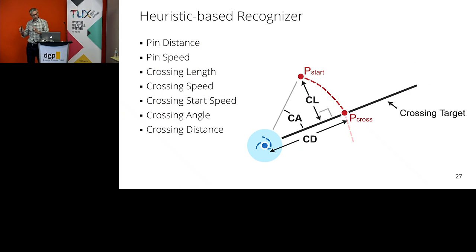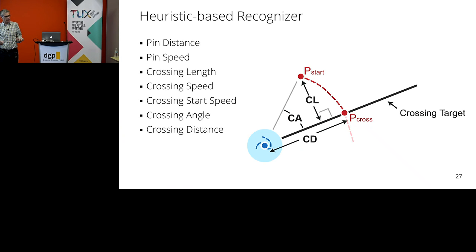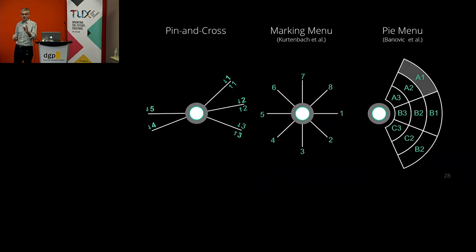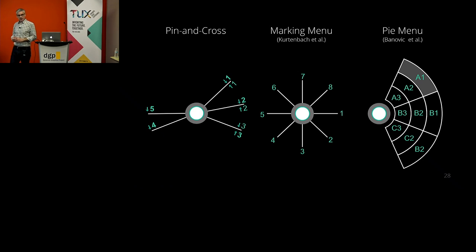Another aspect of this work was developing a heuristic recognizer — a set of rules to recognize which gestures are pin and cross and which aren't, with some math involved. We also ran a comparison against other leading techniques. We had pin and cross using a restricted set of angles with eight different target directions, compared against a marking menu, a half pie menu, and another variation — basically looking at how pin and cross compares against alternative ways to do something similar.